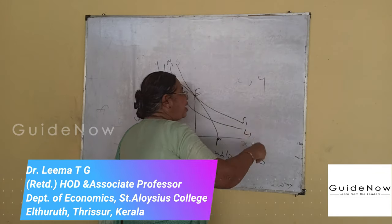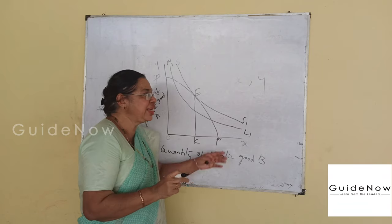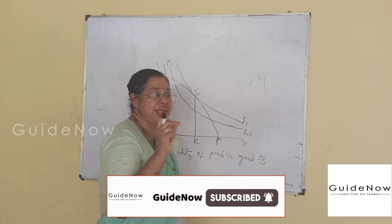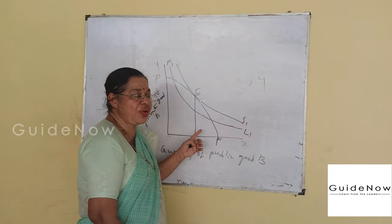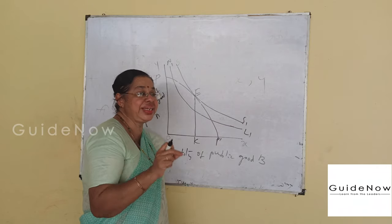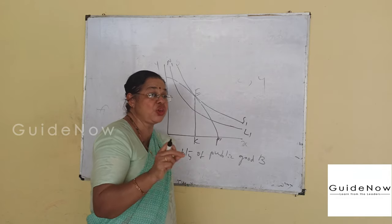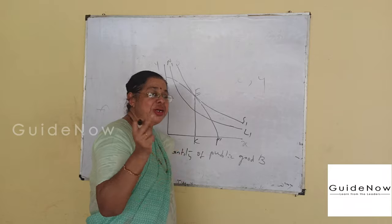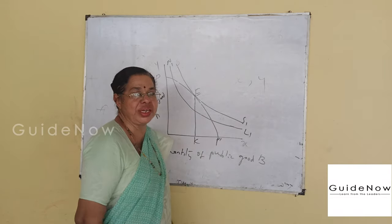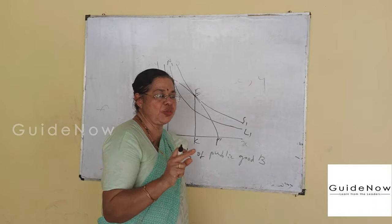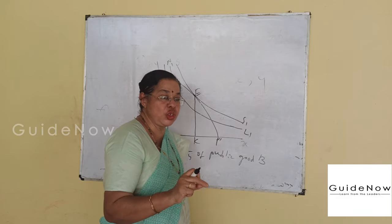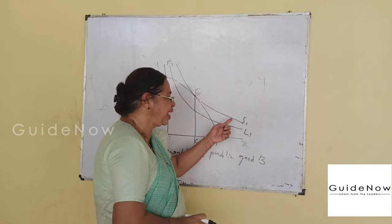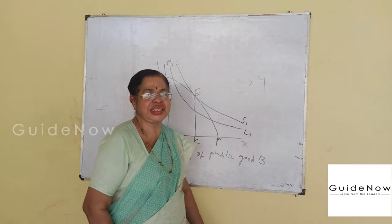There are two consumers, X and Y, who belong to the community — individual X and individual Y are consumers existing in society. The indifference curves show the utility attained by individual consumer X and individual consumer Y, reflecting their demand for private goods and public goods.